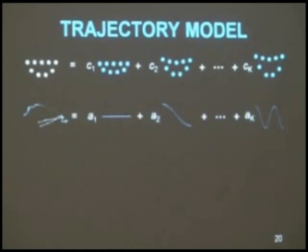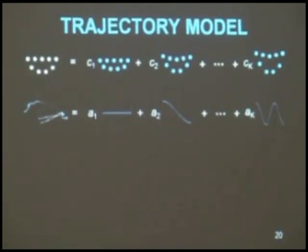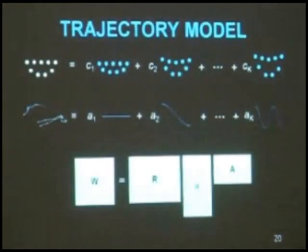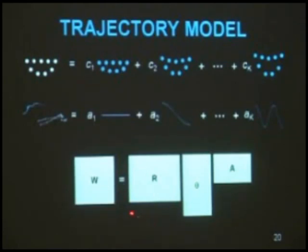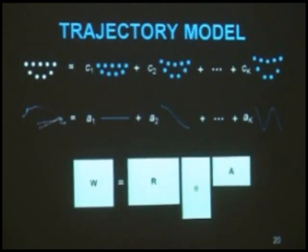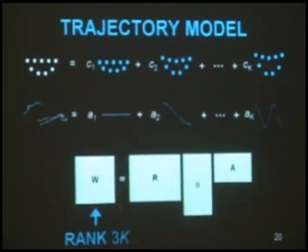In our case, the equation turns out to be similar but somewhat different: we have the camera matrix times the basis times the coefficients — slightly different from the previous one but quite similar. It turns out that if we have K bases, we also have the rank of the measurement matrix W as 3K, which makes it possible to solve this problem.